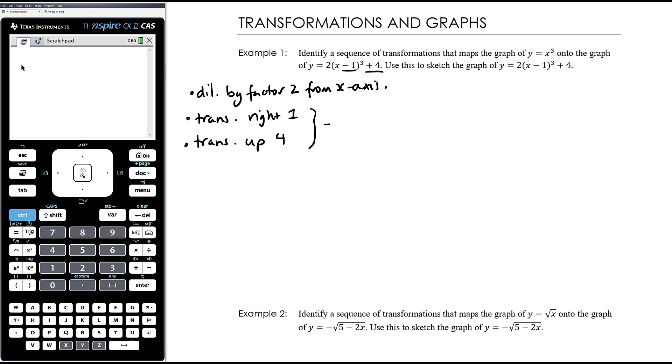Those 2 things combined tell us that our turning point, or it's not a turning point in this case, it's a point of inflection, is at the point (1, 4). So that's important in sketching our graph. Where the turning point is, it's not being reflected so the shape is still going to go this way, that will be (1, 4). And we now just need to work out where it crosses the x and the y-axis.